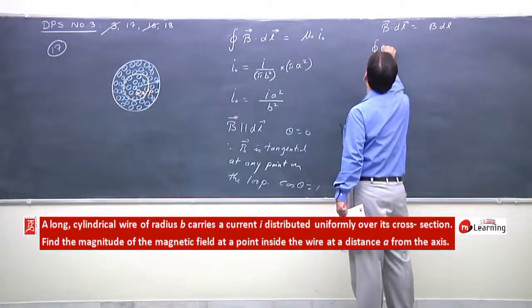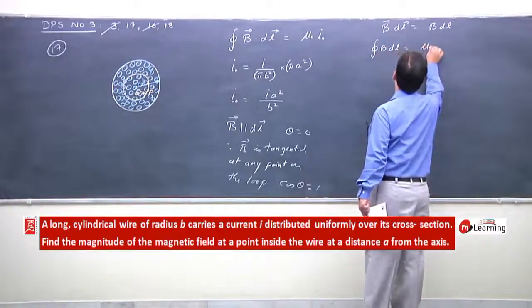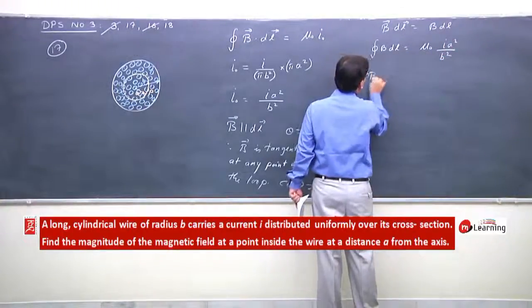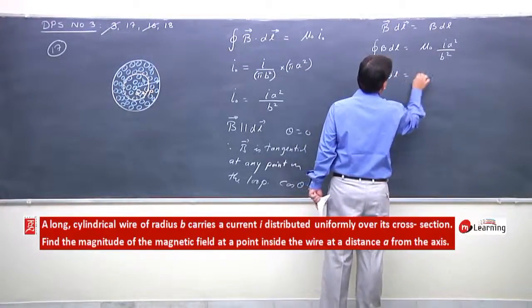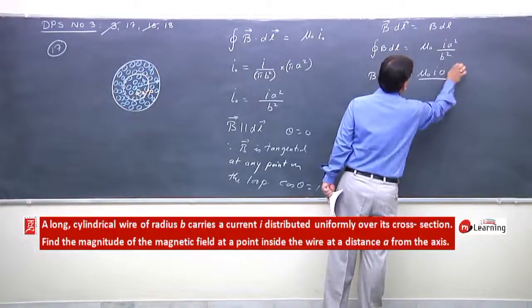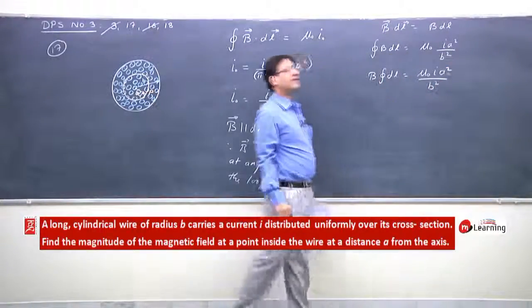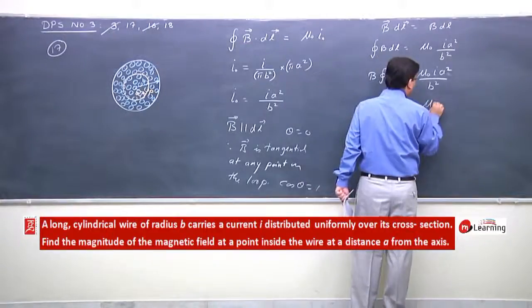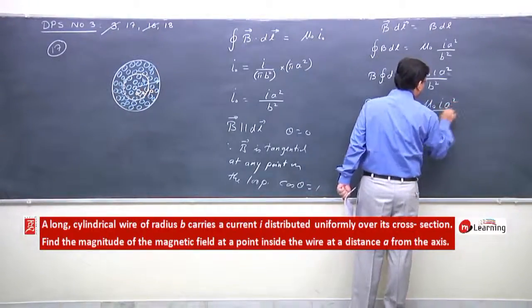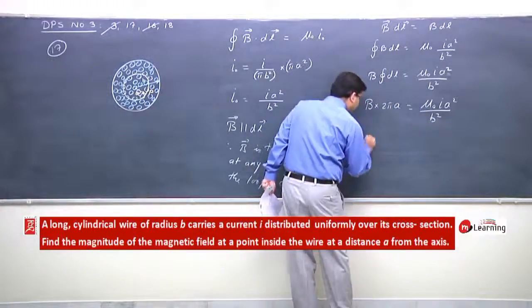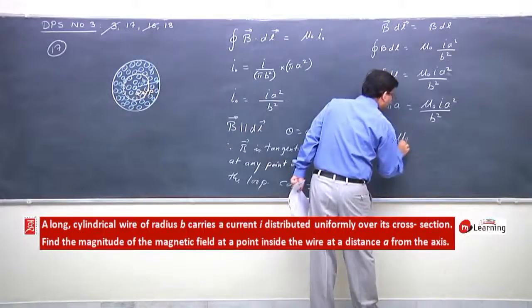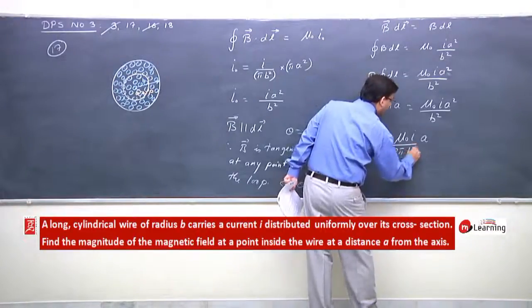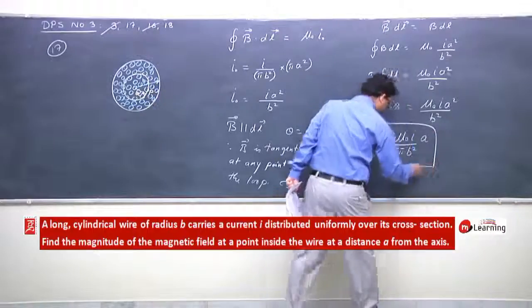So, substituting, integral BdL equals mu naught I A square by B square. For a uniform circular loop, integral of dL is 2 pi A. So B into 2 pi A equals mu naught I A square by B square, and B is mu naught I A by 2 pi B square.